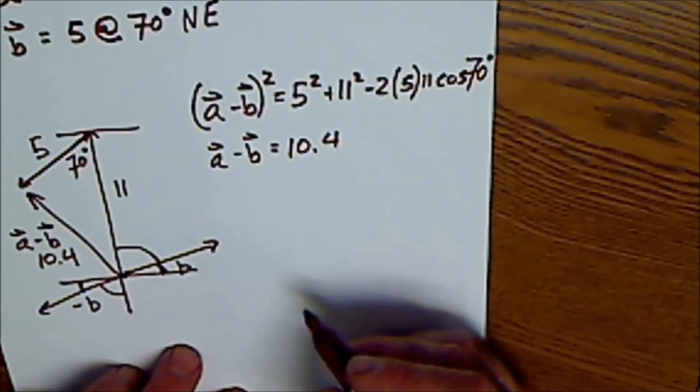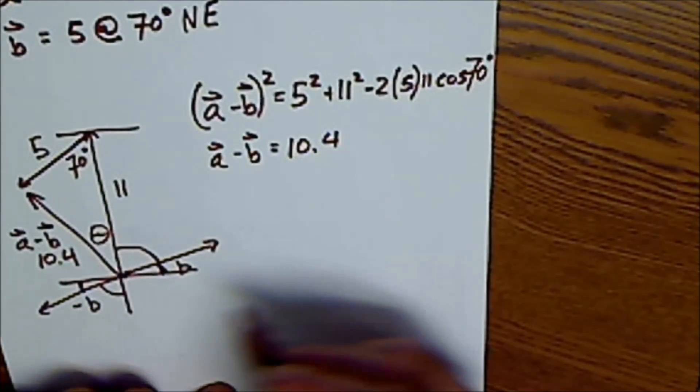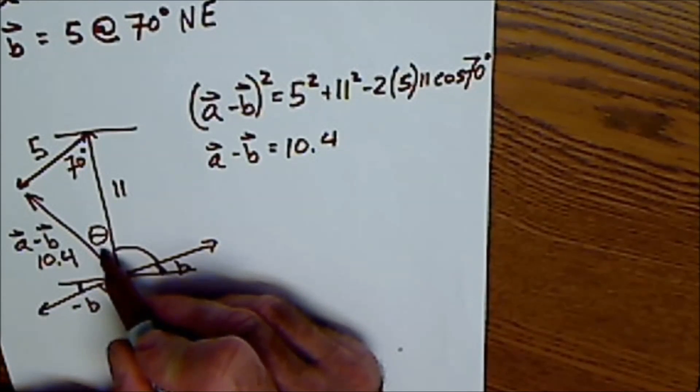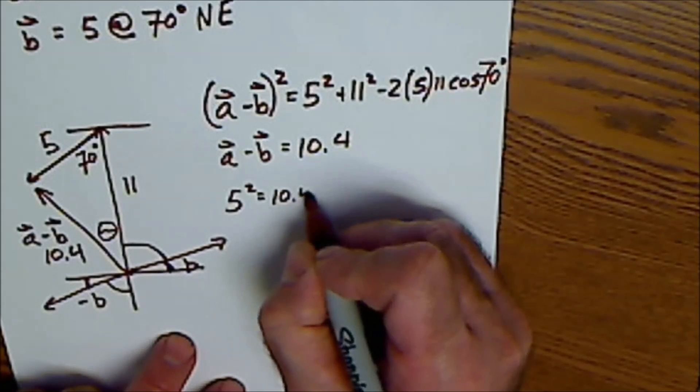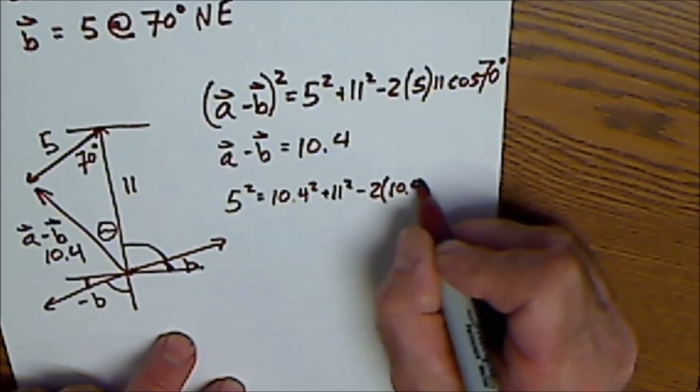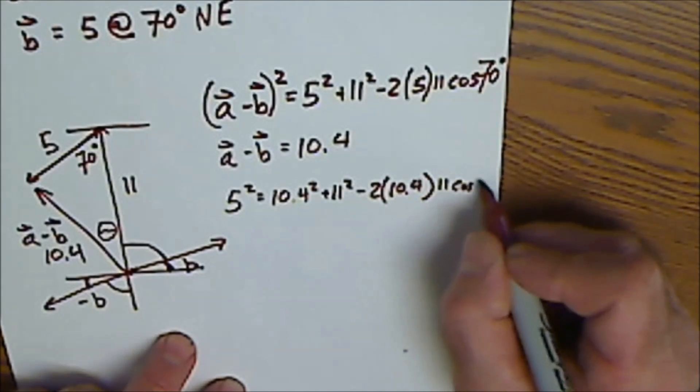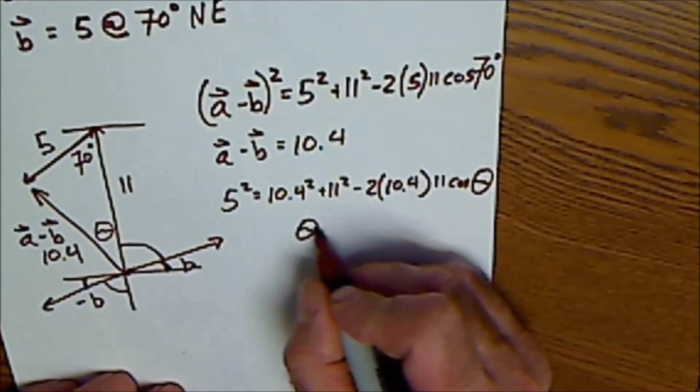Now I have to find an angle. I'm going to find this angle here, theta. I'm going to use the law of cosines to find that angle theta. So I'm going to take the side opposite it, 5 squared, equals one leg squared, the other leg squared, minus 2, one leg, the other, cosine of theta. So cosine of theta equals 0.89. I take the arc cosine of both sides. And this angle theta works out to be 27 degrees.